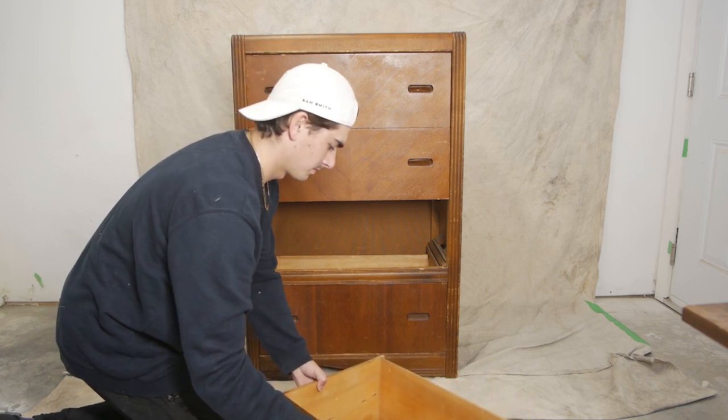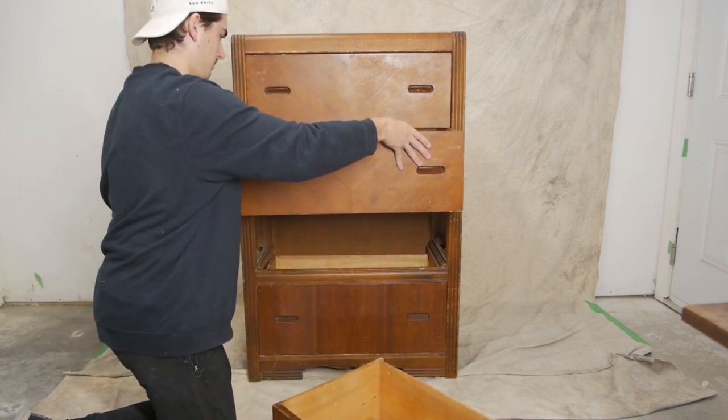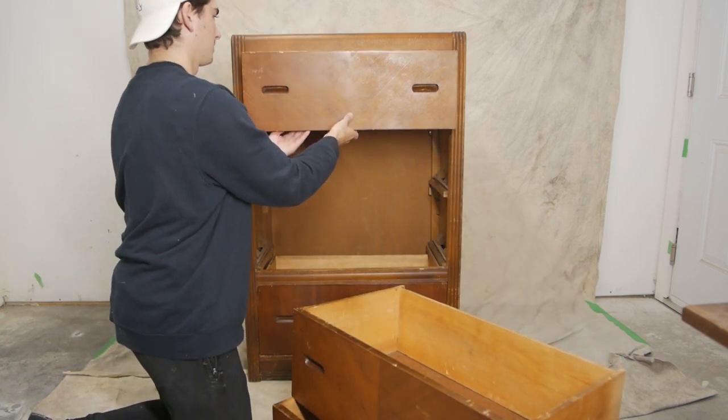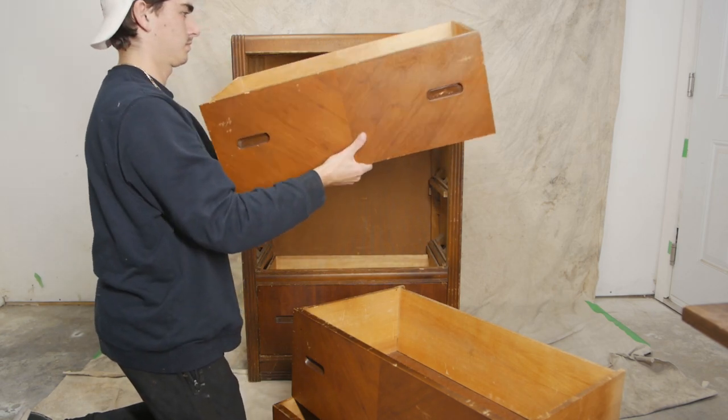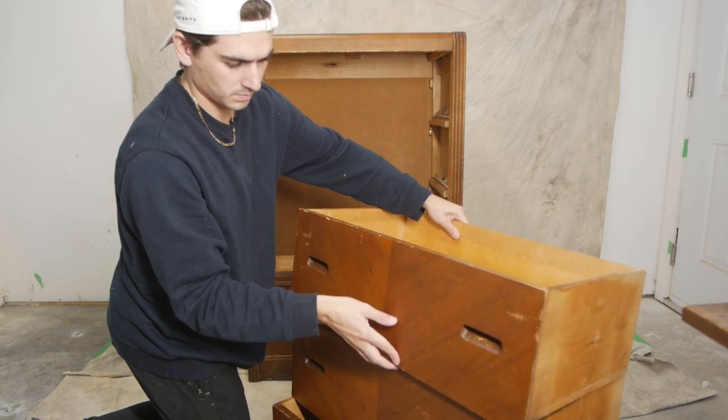My plan here is to paint the outside parts black, but I'm going to stain the drawers and the top. I really like the veneer design so I wanted to save that aspect of the dresser.